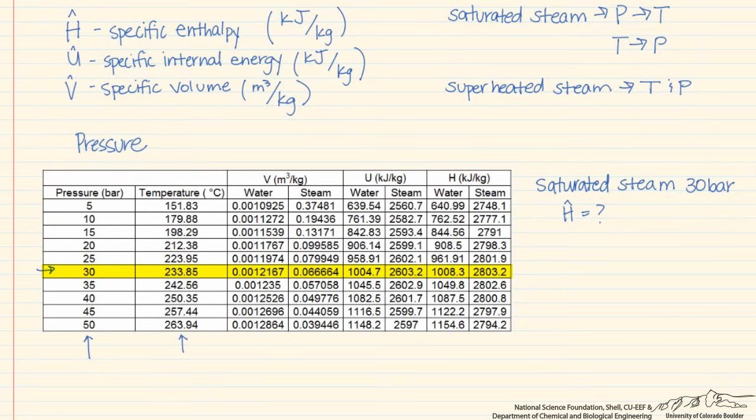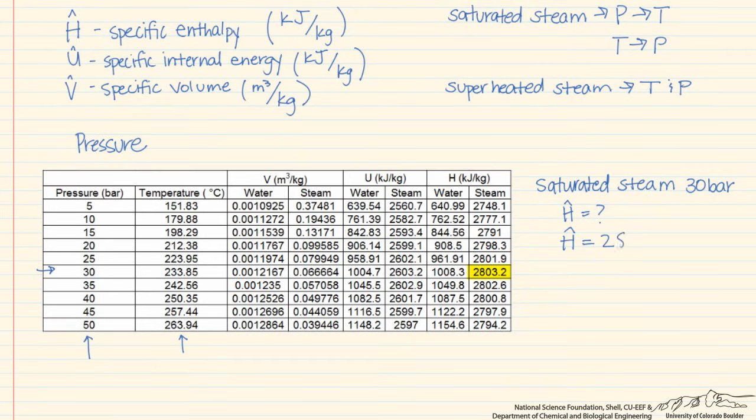And we have our specific volume of both the water and the steam. We have our specific internal energy, and now we have our specific enthalpy. So we're asked for the steam, so our specific enthalpy is therefore 2,803.2 kilojoules per kilogram.